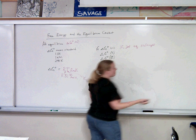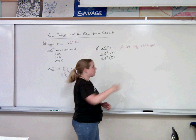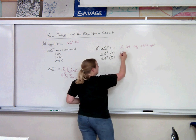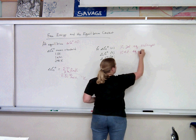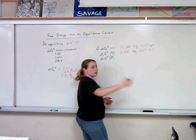Or we can say that that means it's favoring the products. So we are heading in the forward direction. If Gibbs winds up being positive, then we know that our K is less than 1, and so the equilibrium is to the left.